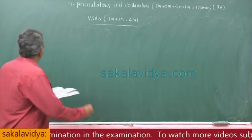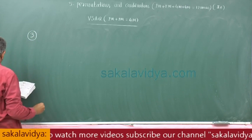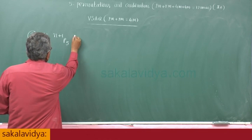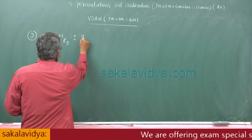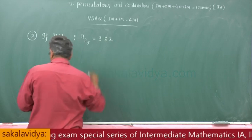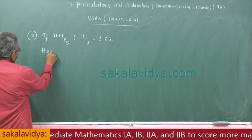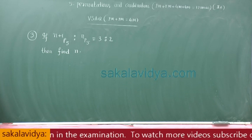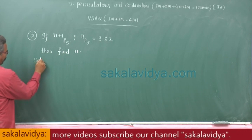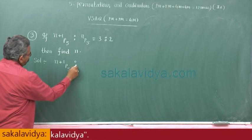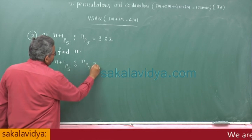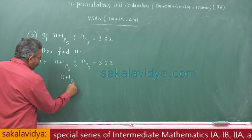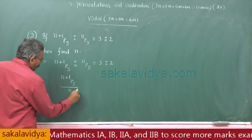Now let us move to the third problem. Third one: if (n+1)P5 is to nP5 is equal to 3 is to 2, then find n. Here given (n+1)P5 is to nP5 is equal to 3 is to 2. Can we write like this: (n+1)P5 by nP5 equals to 3 by 2?